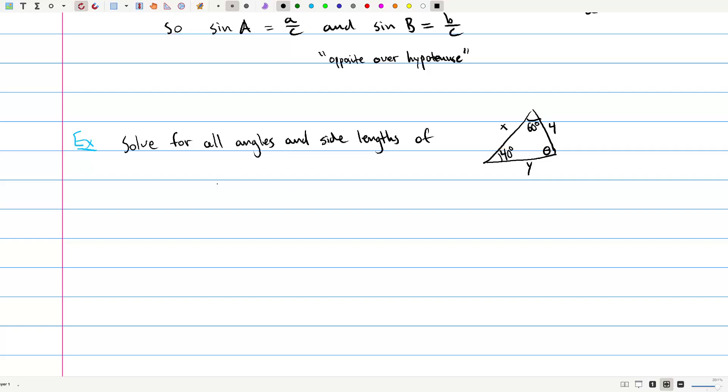So first of all, we know that 180 degrees is equal to 40 degrees plus 60 degrees plus theta. So let's subtract 100. We can solve. So theta is 100 degrees. No, sorry. I meant to say it's 80 degrees. So that's the easy first part. We've got our angle.